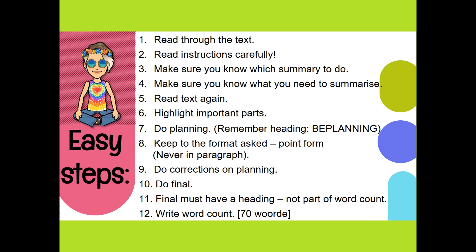When they say which summary, it means not which text, but how do you need to summarize? Is it facts? Is it tips? Is it wenke? Make sure you know what you need to summarize. Read the text again, highlight your important parts, and do your planning. Remember that you have to have a heading that says 'planning'. Keep to the format asked — it's always point form, never in paragraph. Do your corrections on your planning, then do your final. Your final must have a heading, but it's not part of your word count. And you have to write your word count at the bottom.